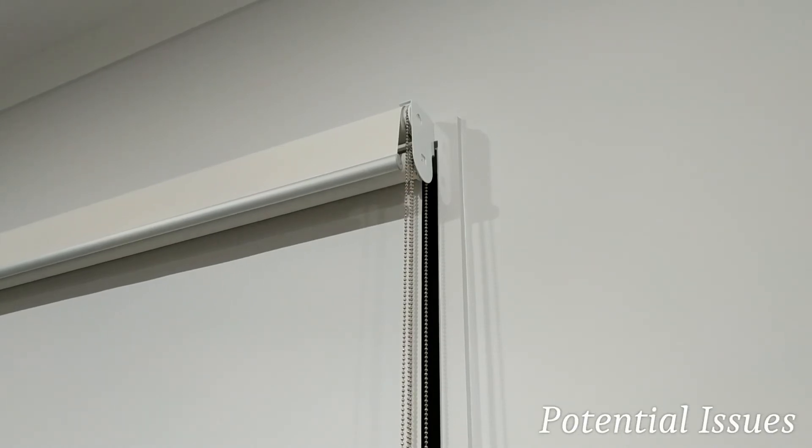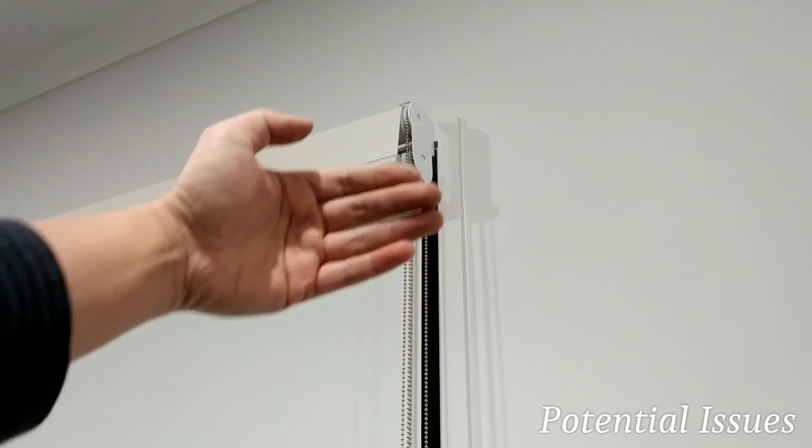So lastly I want to talk about issues that you may encounter, and it's best that you actually discover these before you order the blinds. The main issue is to do with any obstructions that may be in the way of the blinds going down straight.